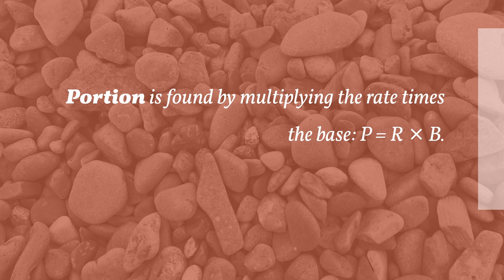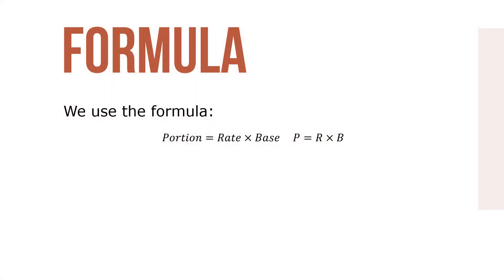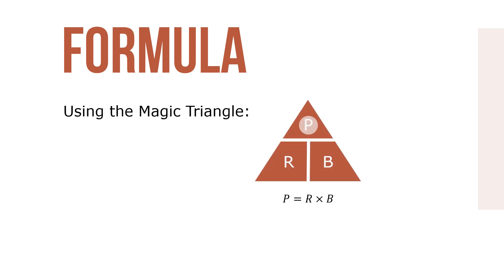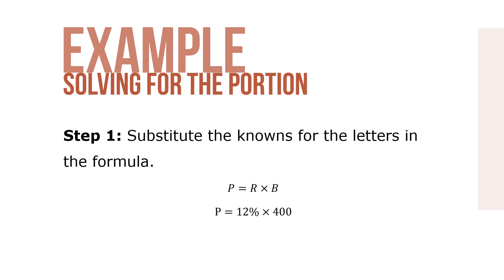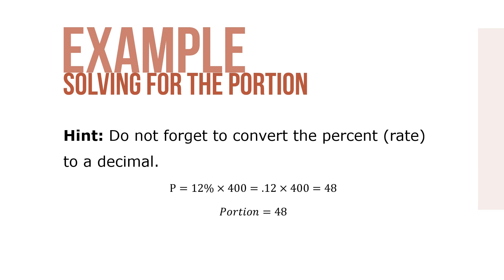Portion is found by multiplying the rate times the base: P = R × B. Using the magic triangle, we see that P equals R times B. Here's an example: What is the portion if the base is $400 and the rate is 12%? Step 1: Substitute the knowns into the formula. P = 12% × 400. Don't forget to convert the percent to a decimal, so P = 0.12 × 400, which means our portion is 48.